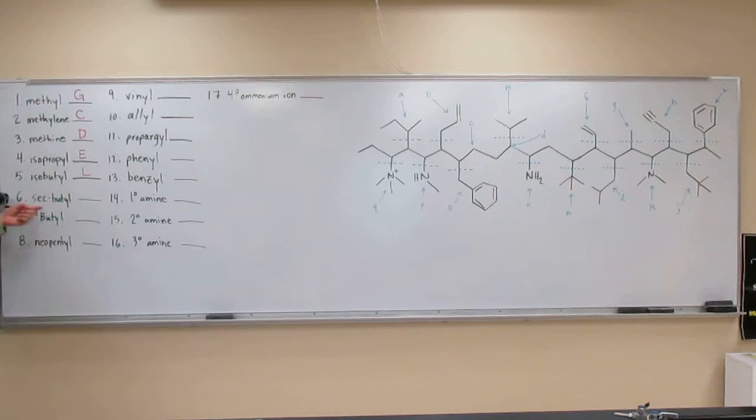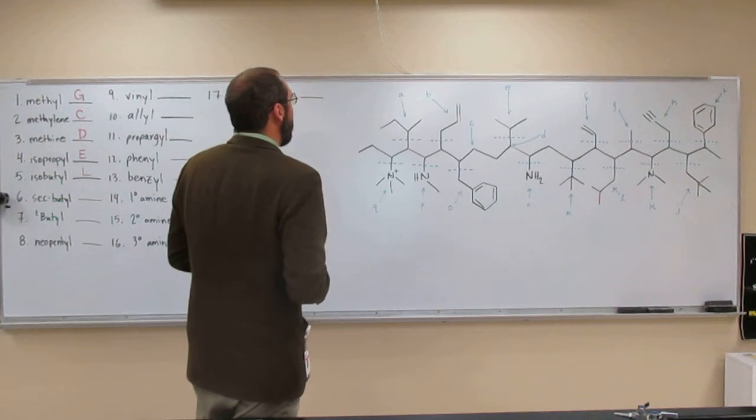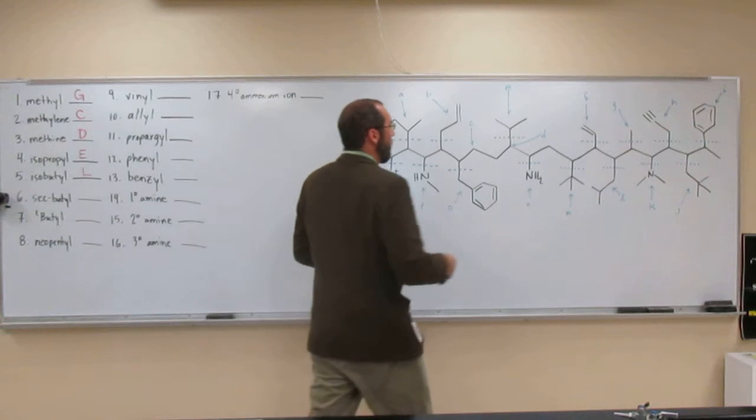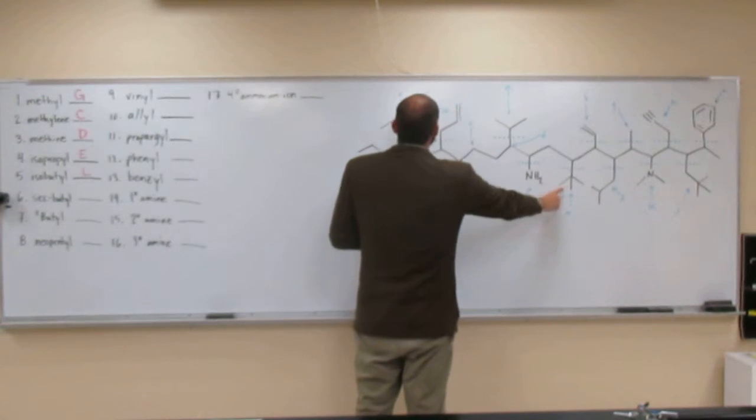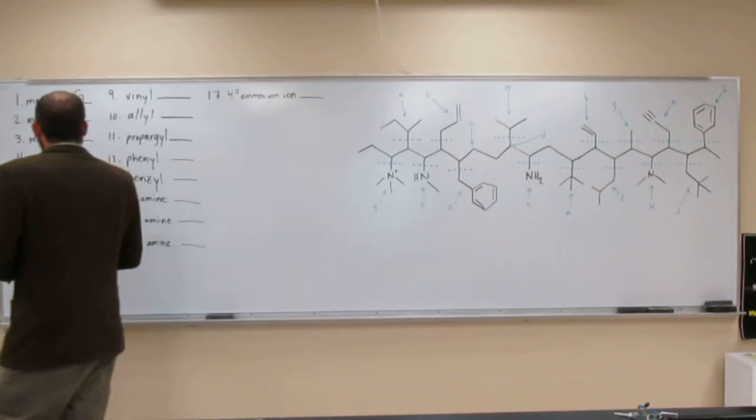So a sec-butyl group, that's going to be another butyl group, right? So four carbons. So if we look around, well, we've got two more. One's here, that's the tert-butyl, and the other one's here, the sec-butyl. So sec-butyl is A.